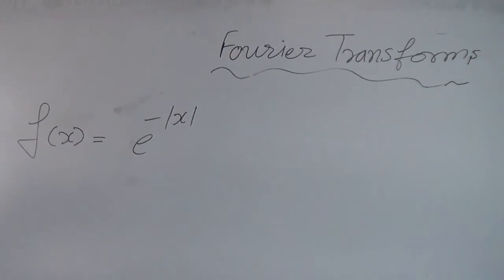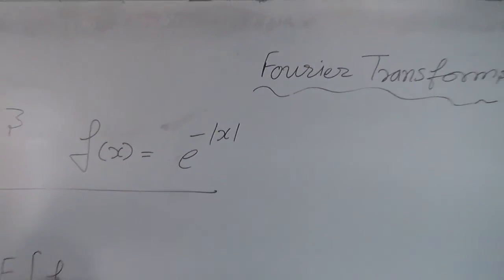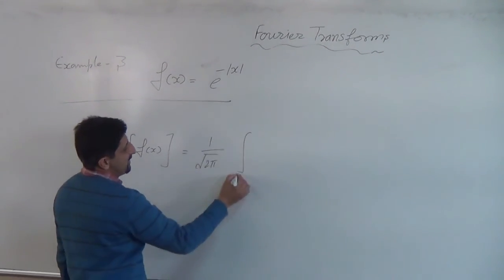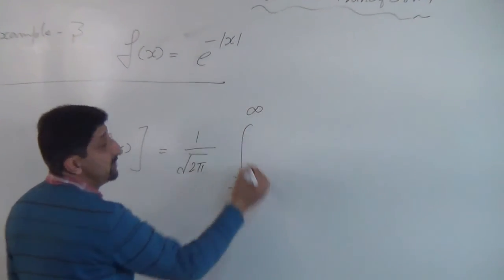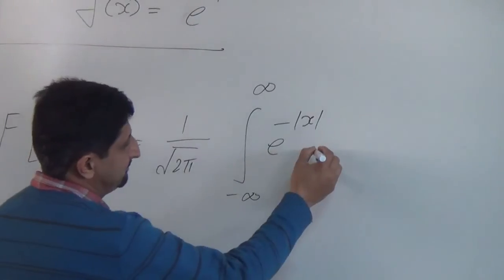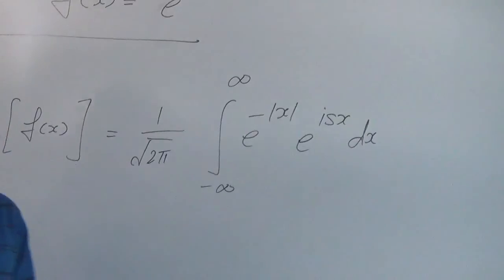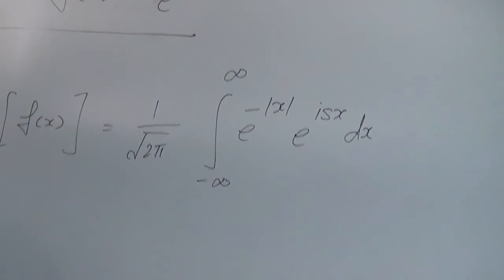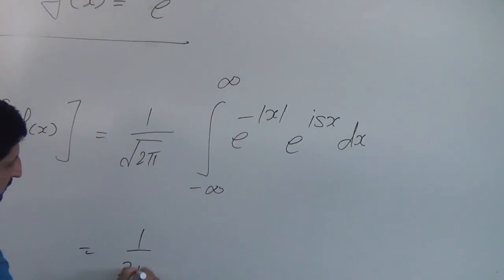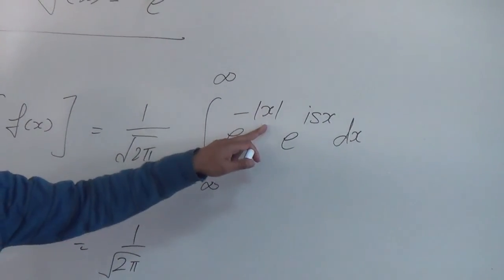Find Fourier transform of this. So you can start with the definition. Fourier transform of f(x) is 1 on root of 2 pi, minus infinity to infinity f(x). So the value of f(x) is given. e raised to the power iota sx dx. Let's go to definition of transform. So what I'm going to put: 1 on root of 2 pi, minus infinity. Now can you evaluate this e raised to the power iota mod x?